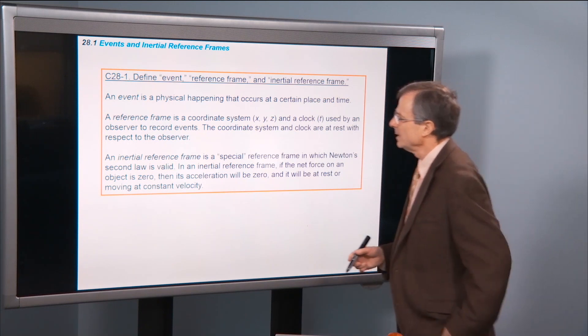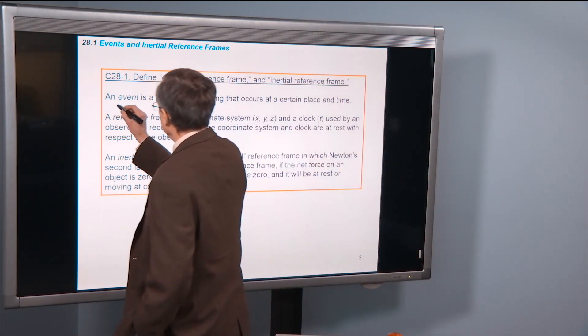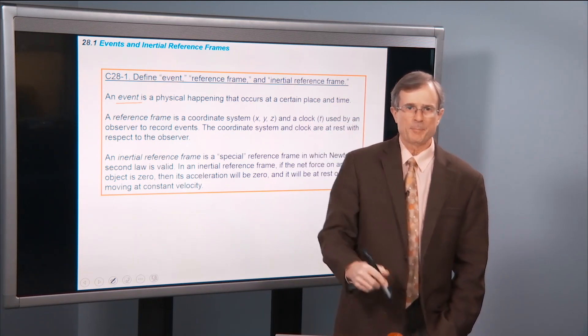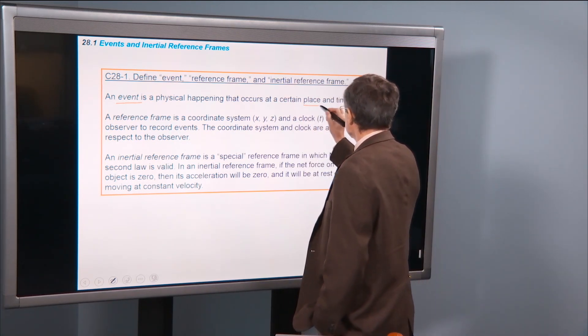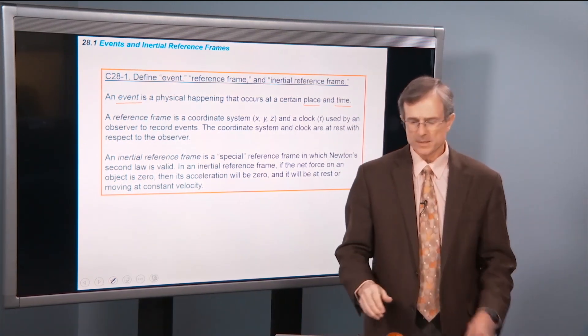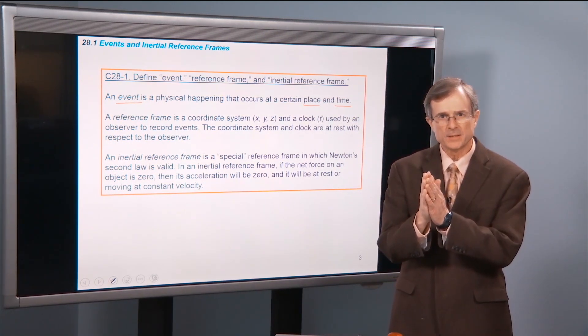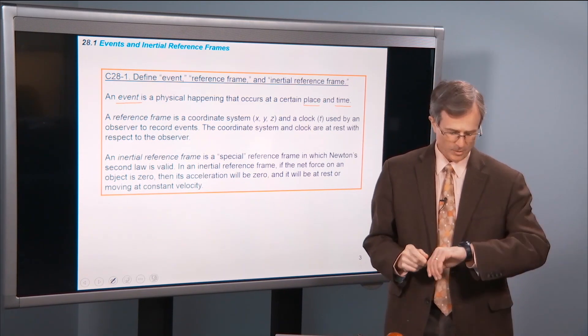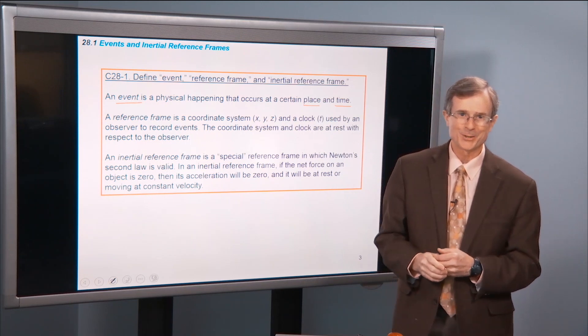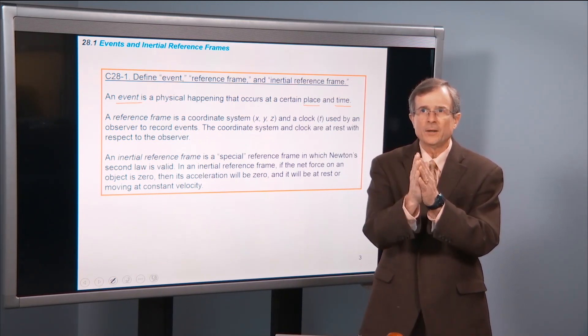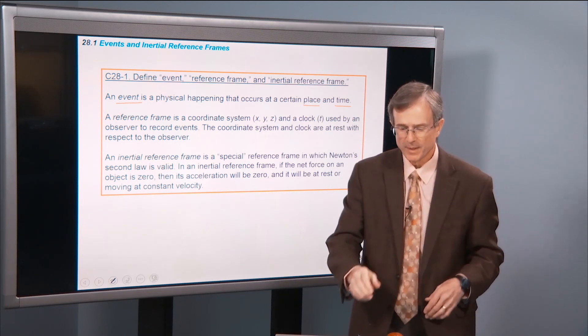An event. What's an event? It's something that happens at a certain place at a certain time. That is an event. I clapped my hands. What was the time? It was 1:16 p.m. on Thursday, March 9th. And what was the place? It was right here where my hands came together. That's an event.